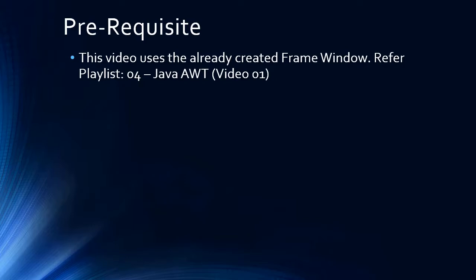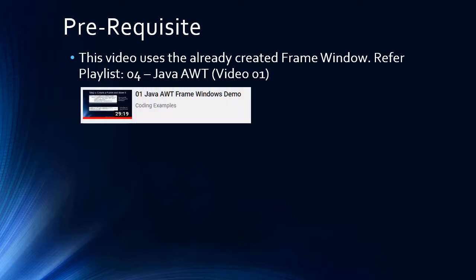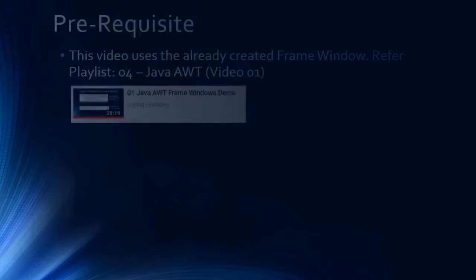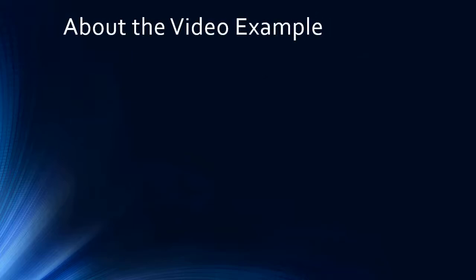This video uses an already-created AWT Frame window. To know how to create an AWT Frame window, refer to playlist 'Zero Four Java AWT' — the very first video in that playlist explains how to create a frame window. You can go to the channel and pick that video. Once the frame window is created, we will add other controls into it.